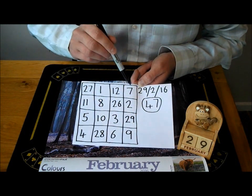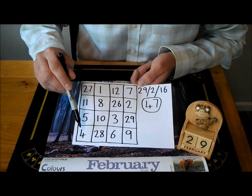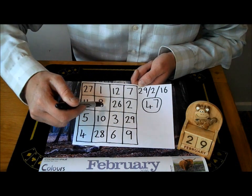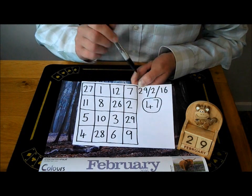If we go diagonally, 7 plus 26 plus 10 plus 4 is 47. If we go diagonally this way, 27 plus 8 plus 3 plus 9 is 47.